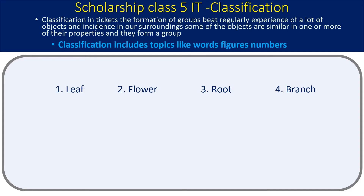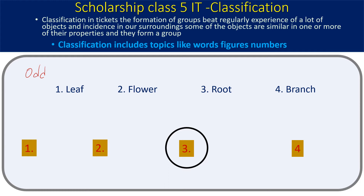Here is an example. There are four things given: leaf, flower, root, and branch. You have to pick out the odd one — the one which doesn't come in the group. The answer is root. Leaf, flower, and branch are all above the soil surface, but root is not.